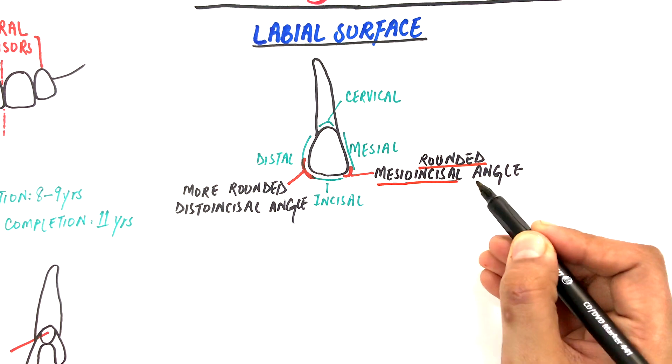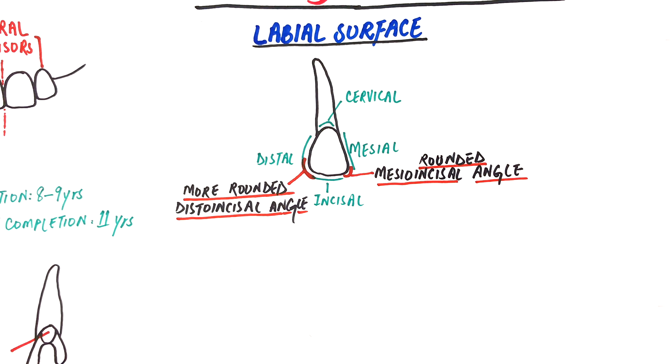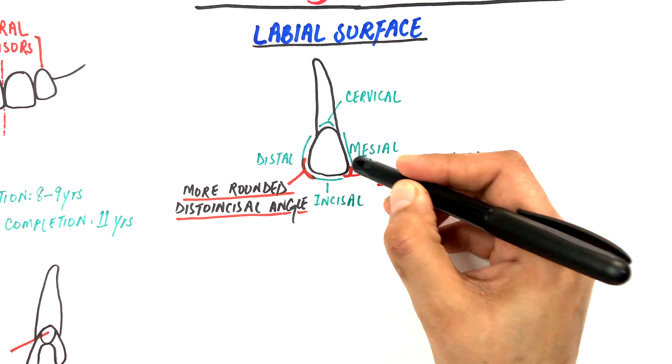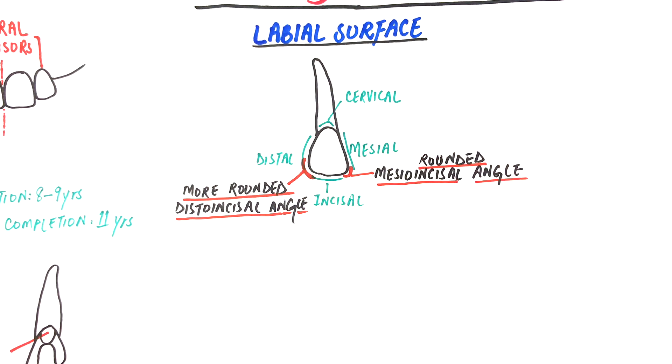The incisal outline resembles the central incisor but is not so straight like the incisal edge of the central incisor. This is because of the greater rounding the tooth has at the mesioincisal and mostly at distoincisal angles. The cervical outline curves in an apical direction with slightly less depth of curvature than in the central incisor.